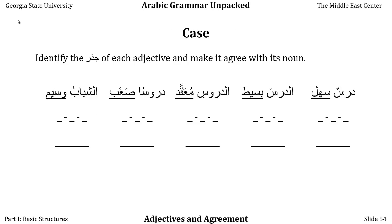So, we have darsun sahil — sahil means easy, dars is lesson. We're making 'an easy lesson.' Dars is already masculine, singular, and indefinite. So sahil remains masculine, singular, and indefinite — all we need to do is add its case marking: darsun sahilun, an easy lesson. Remember, Arabic has no word for 'a' or 'an.'